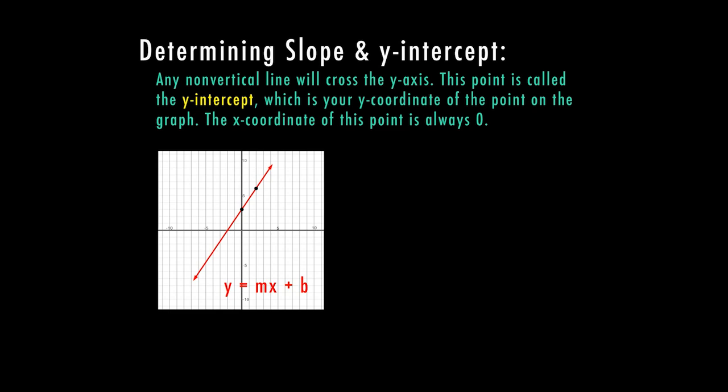So this line right here is linear, non-proportional. It does not go through the origin, zero, zero. So we do have a y-intercept. It does cross the y-axis.